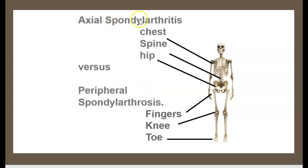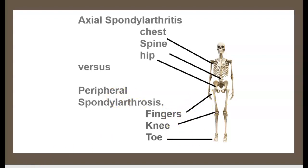Axial spondyloarthritis involves the chest, spine, and hip. Peripheral spondyloarthritis involves the fingers, knee, and toes.